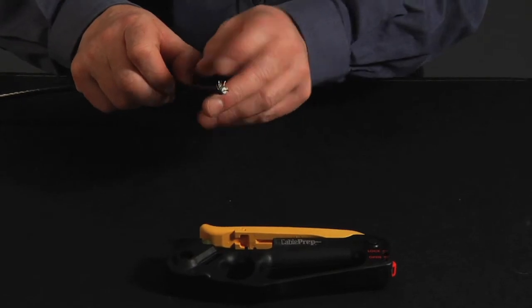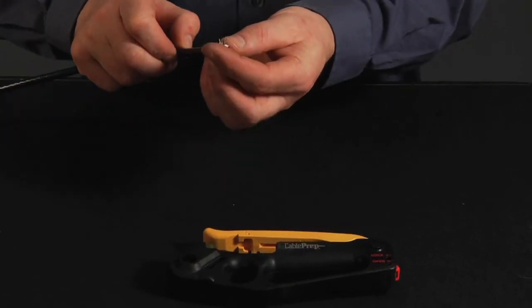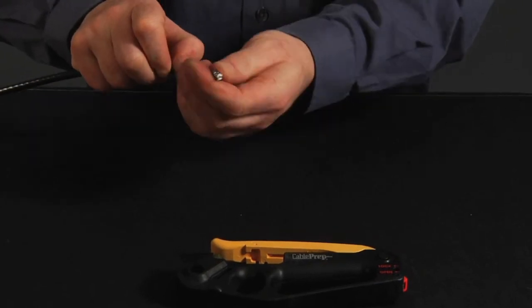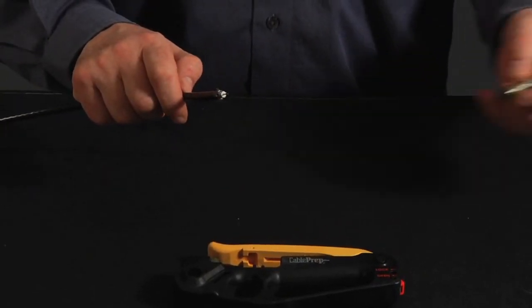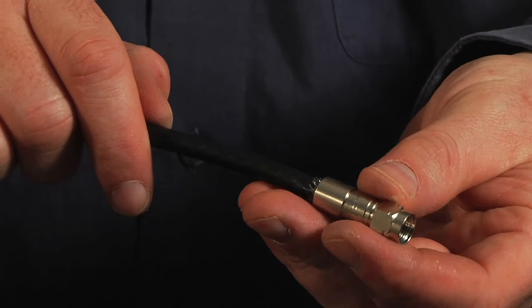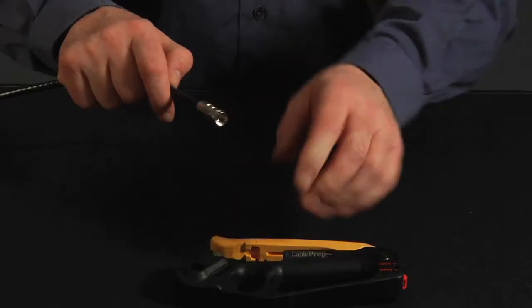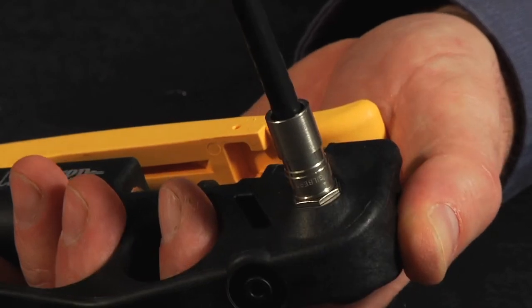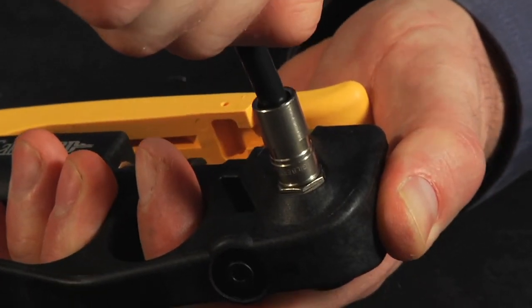Fold back the braid on the cable. Insert the cable into the connector. Using the insertion tool on the HPT, further insert the cable to its proper depth in the connector.